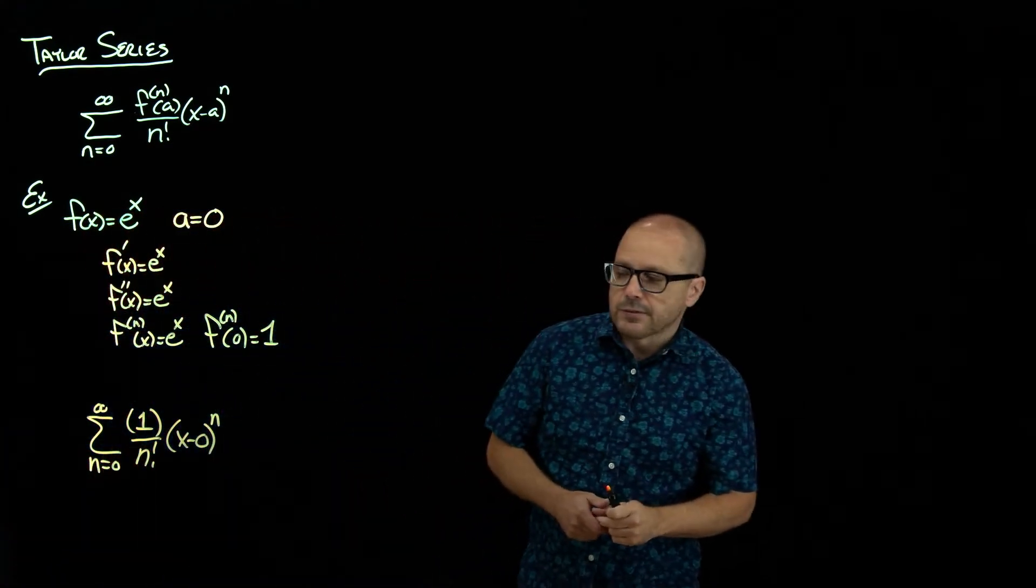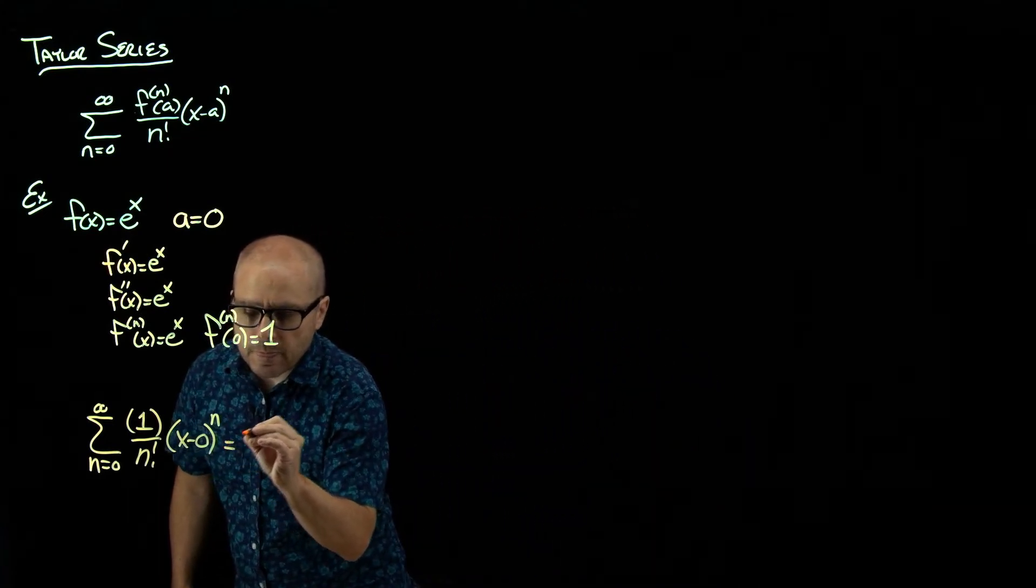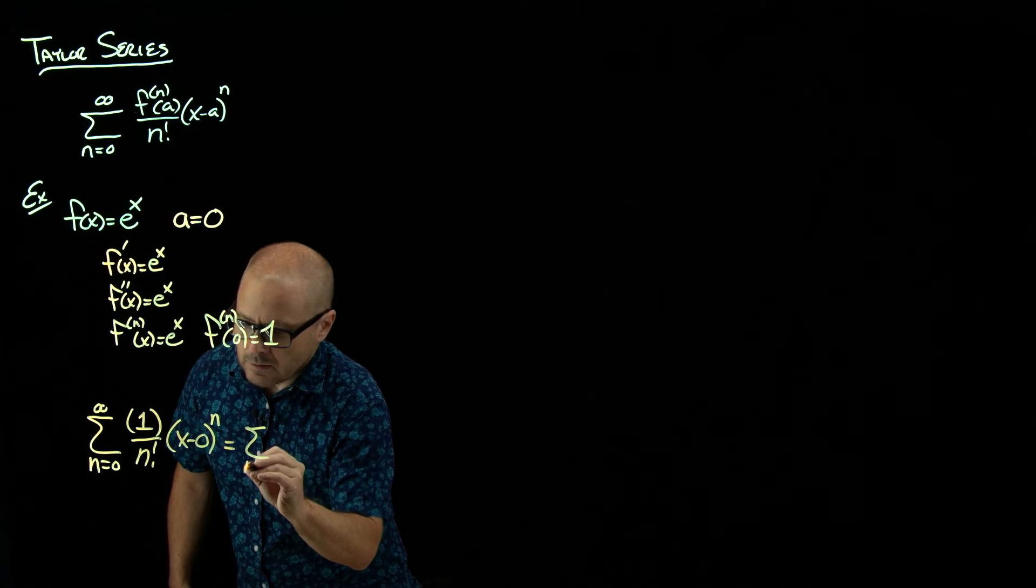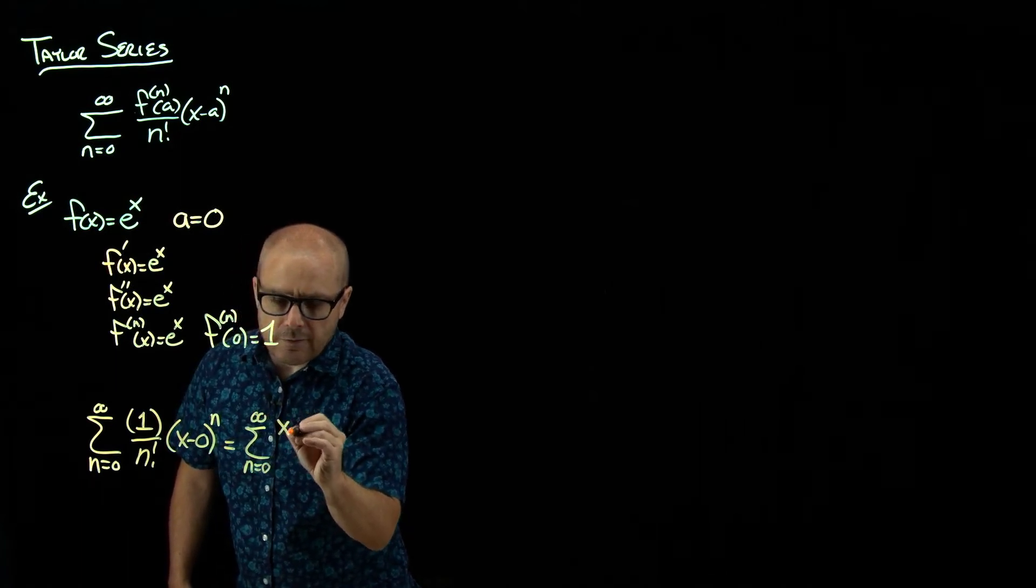x minus our A in this case was 0 to the n. So there's our Taylor series for e to the x. We could neaten that up a little bit. Just say x to the n over n factorial.